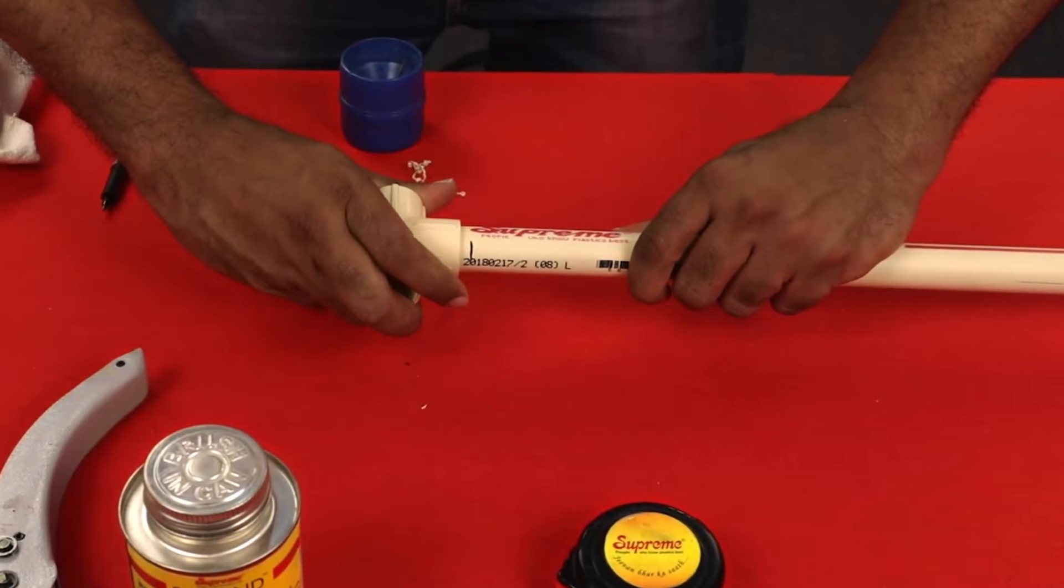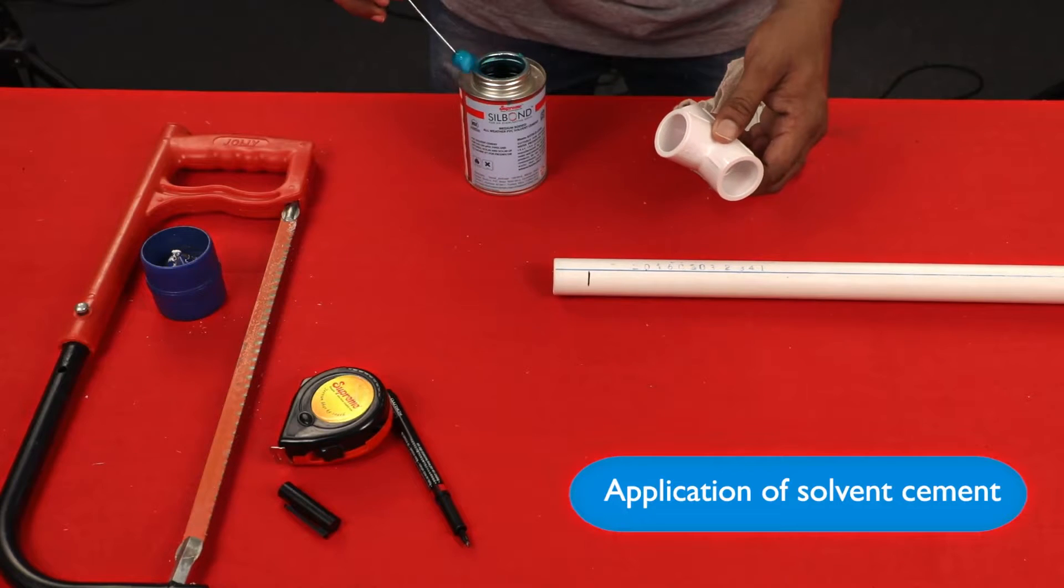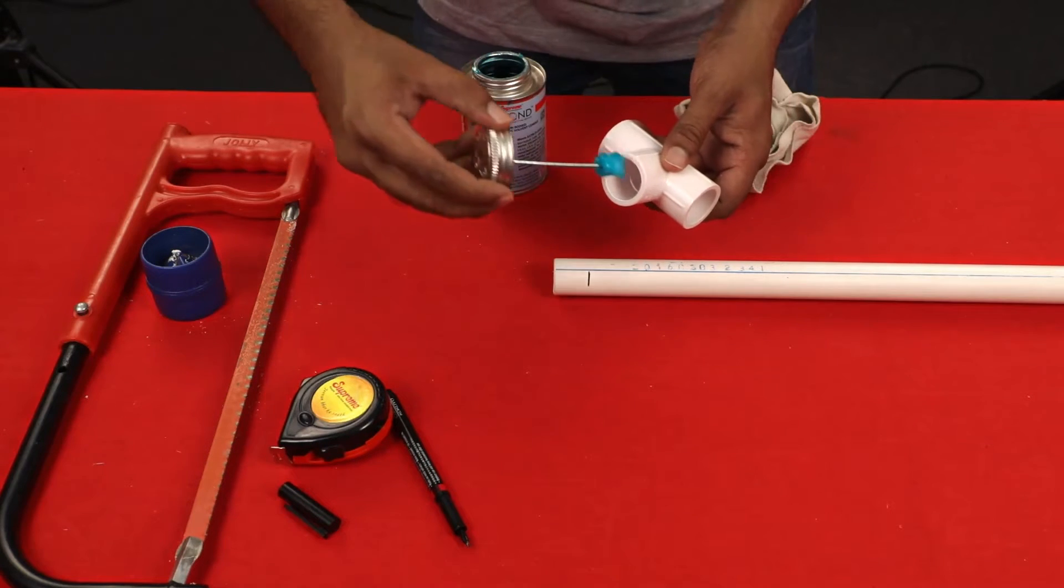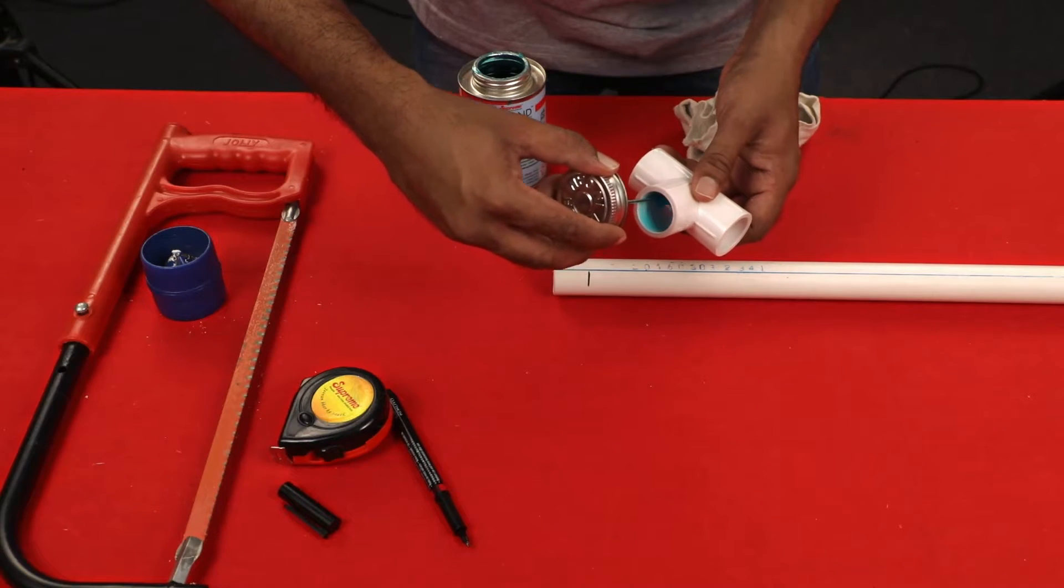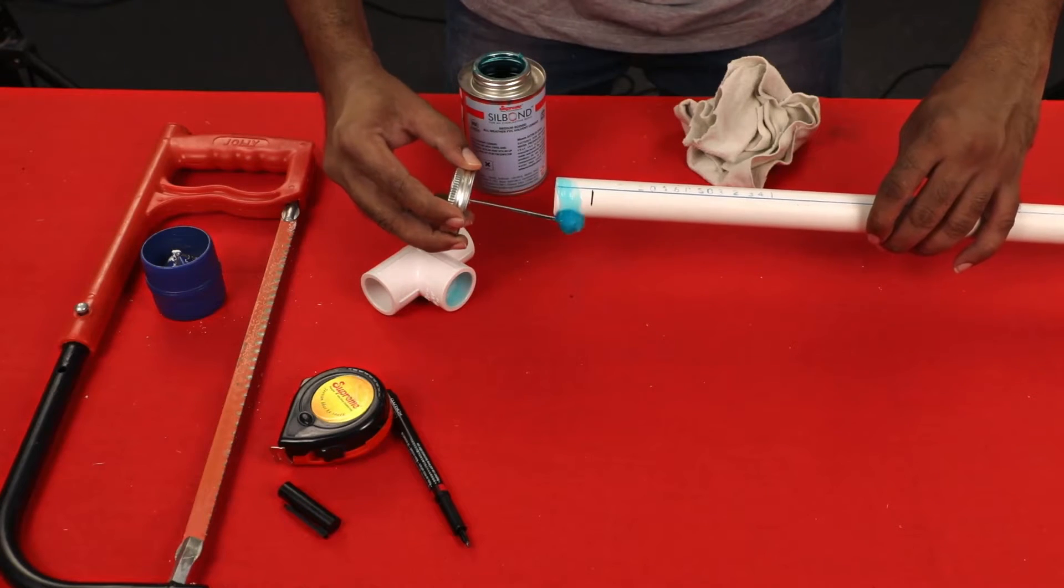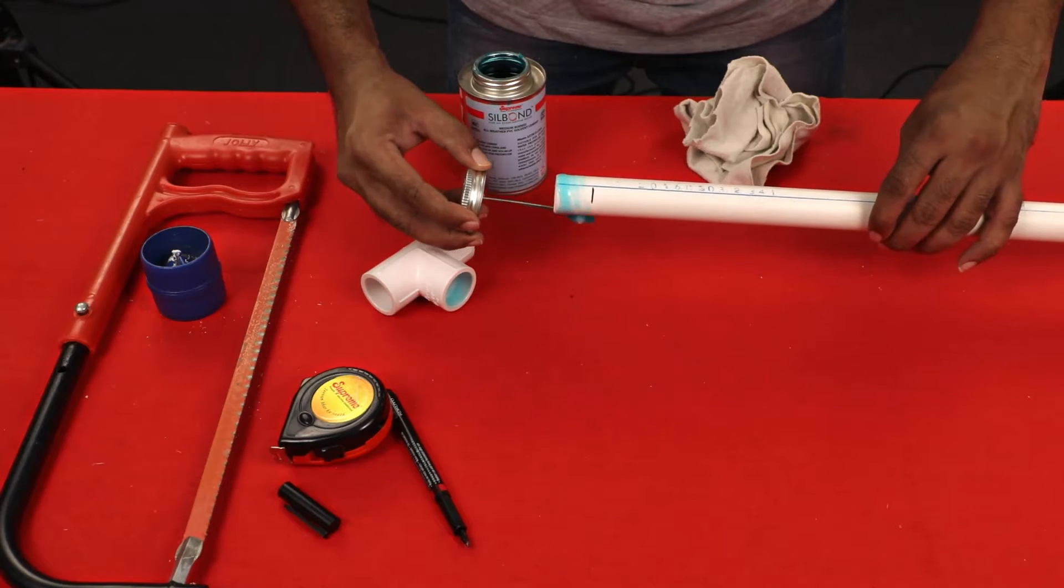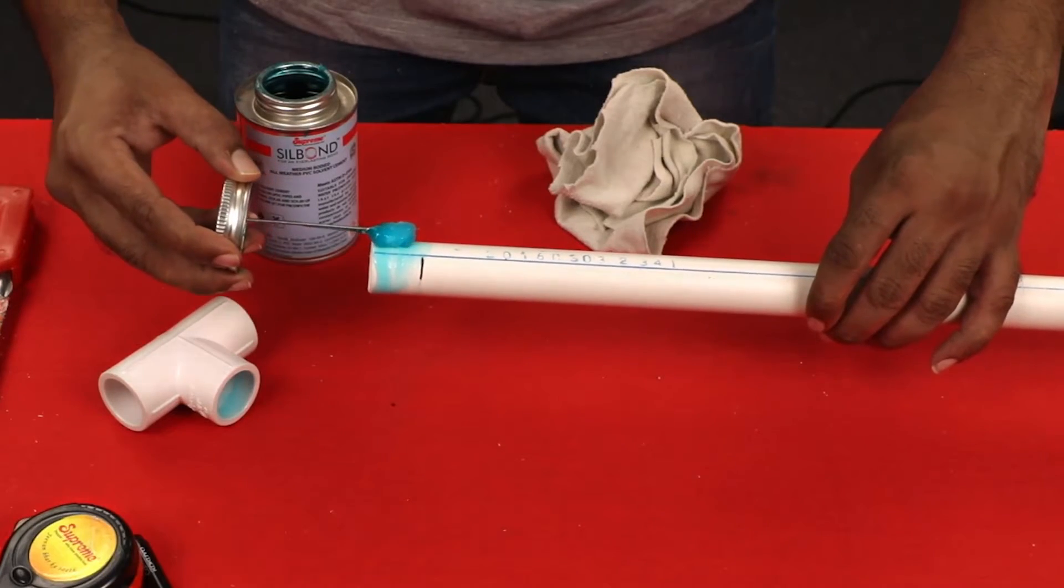Application of Solvent Cement: While making a joint, apply the solvent cement lightly but uniformly to the inner surface of the fitting socket and the outer surface of the pipe end using brush or suitable applicator. Apply a second coat of cement to the pipe end.